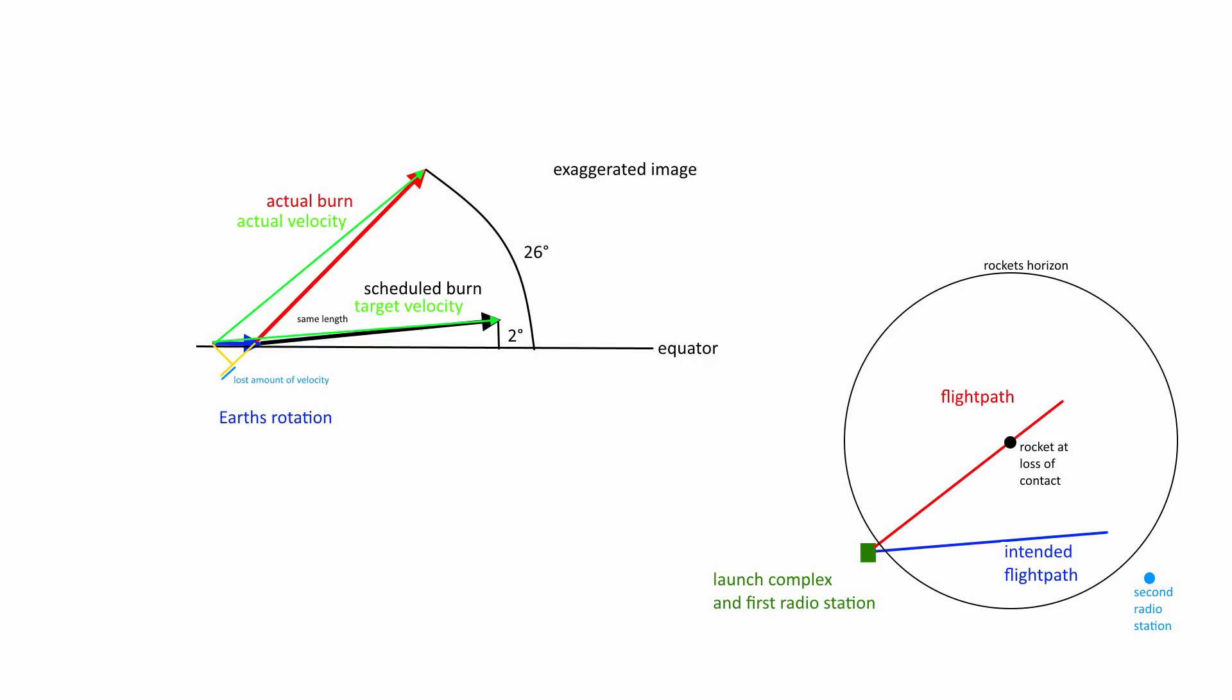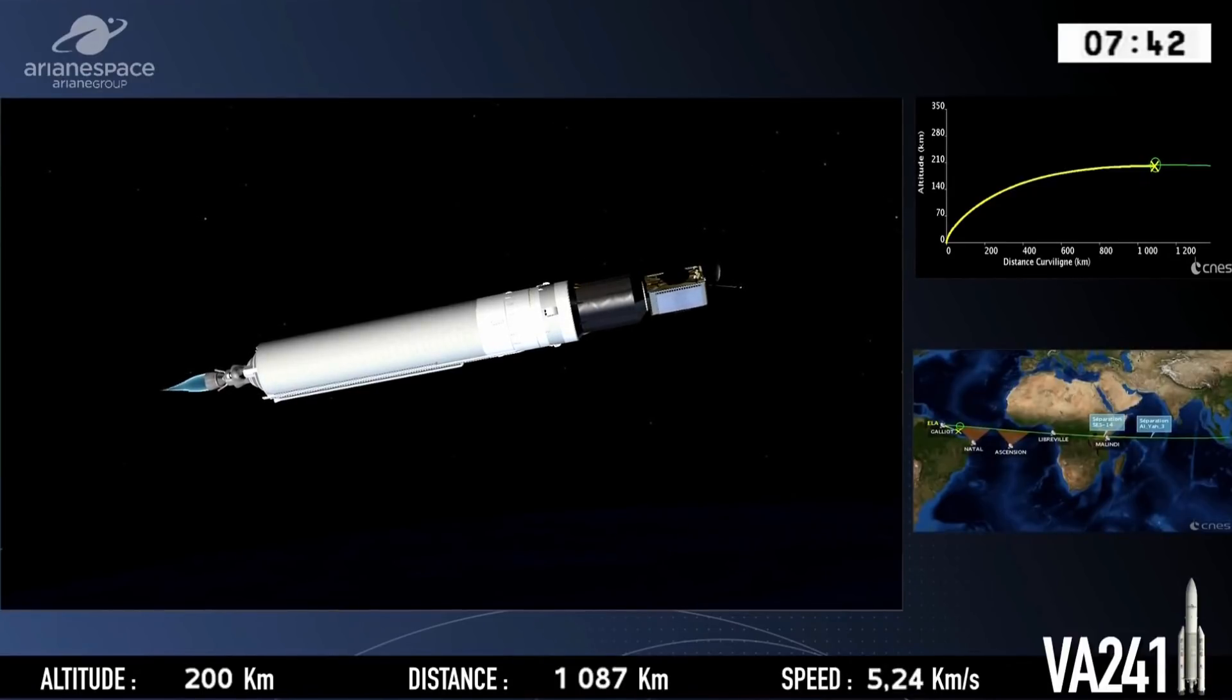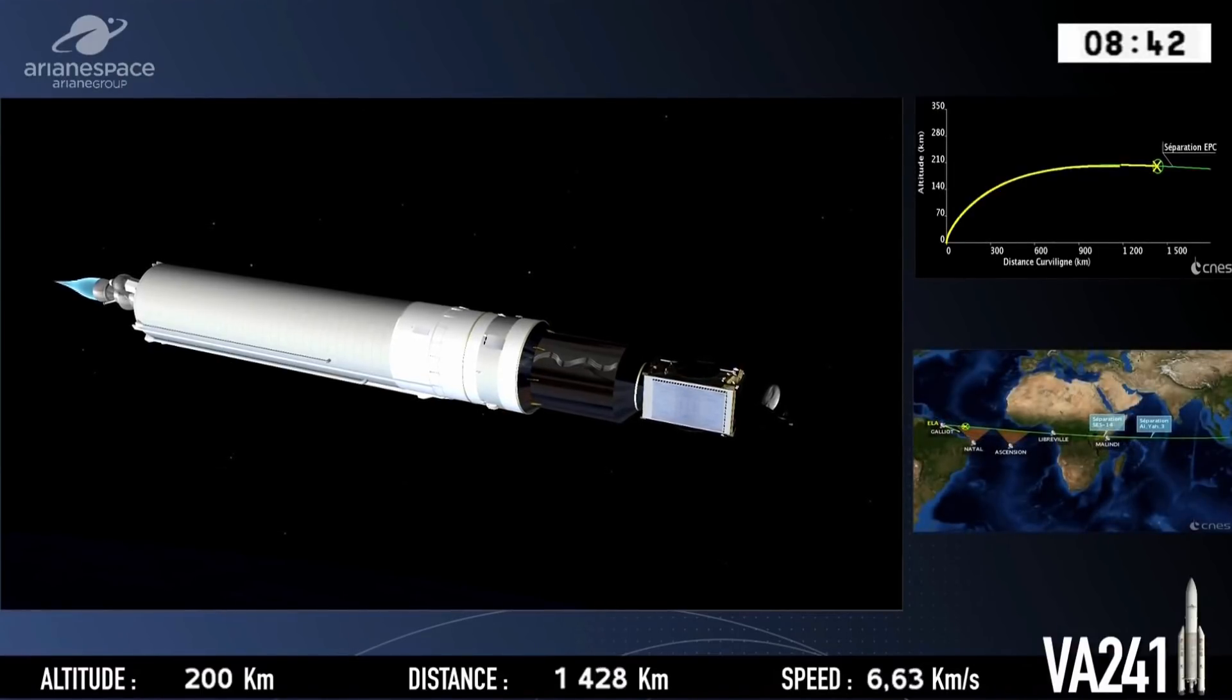So there is currently no indication that anything else went wrong other than launching into the wrong inclination, and everything else went by plan. And that itself isn't really the big problem, you can raise the orbit, its perigee and apogee are still relatively close to where they were planned to be, and this orbit raising isn't too fuel intensive.